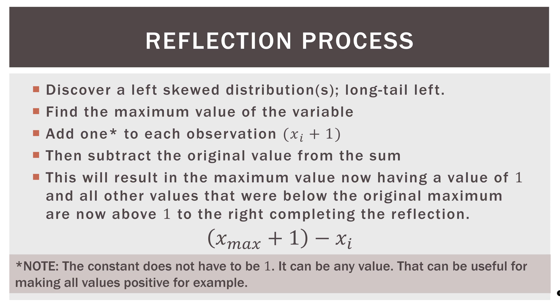Now, as I mentioned, the constant does not have to be one. It can be any value. That can be useful for making all values positive, for example. So in the previous slide, I mentioned that when we're taking logarithms, we want the lowest value to be one. So what we can do is change the value of the constant. So that when we do our transformation and reflection, the lowest value is one. And then from there, we can do our logarithmic transformation if that's the one we have decided on.